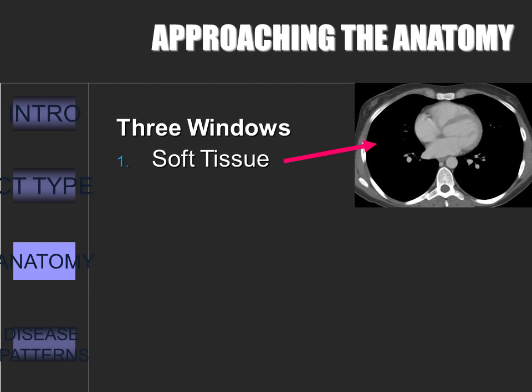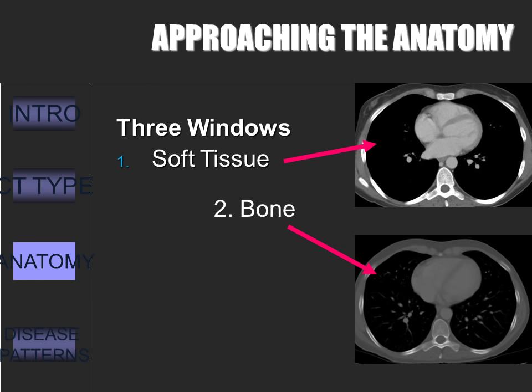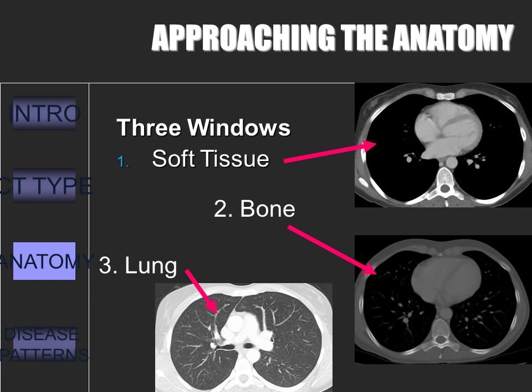Now we'll switch gears and focus on the basics of looking at a chest CT. It is important to have a systematic way of approaching the chest. There are three windows. The first highlights the soft tissues, next is the bone window, and then the lung window. I would suggest switching between windows in this order, or else you might get bogged down by the lung parenchyma and forget about the bones and soft tissues. Remember, the key is to be systematic.